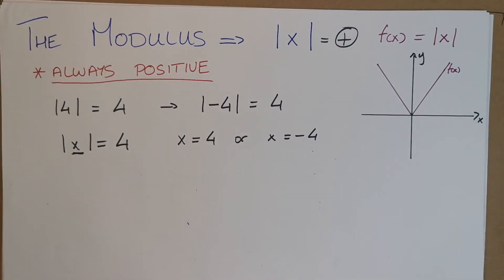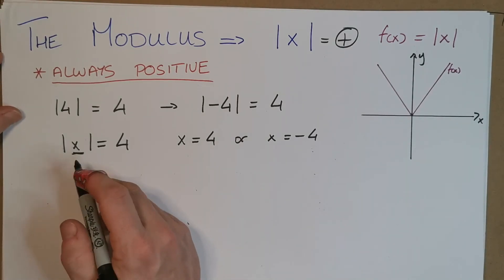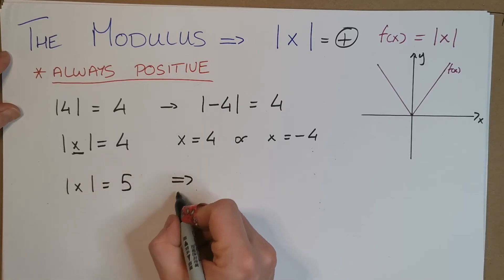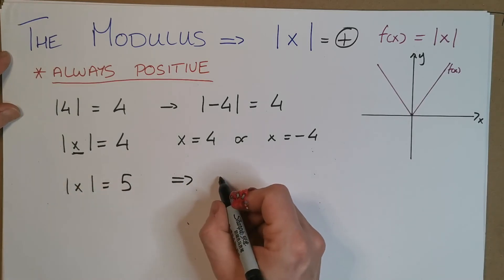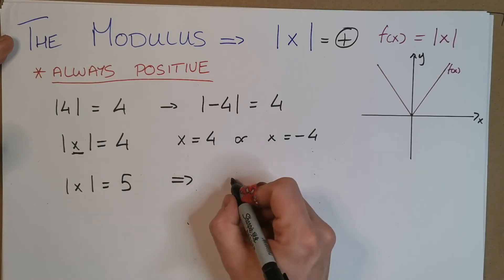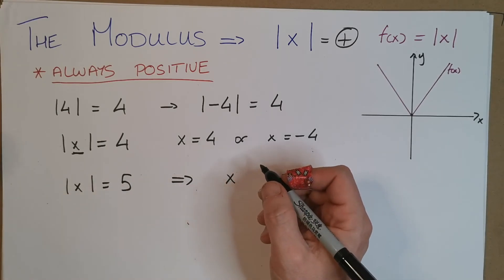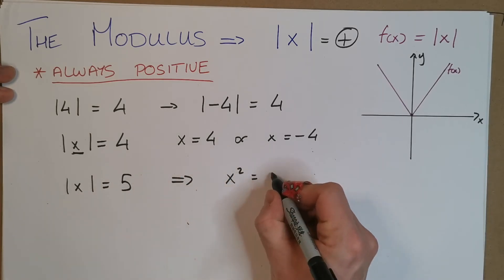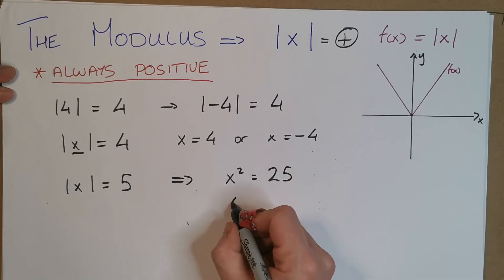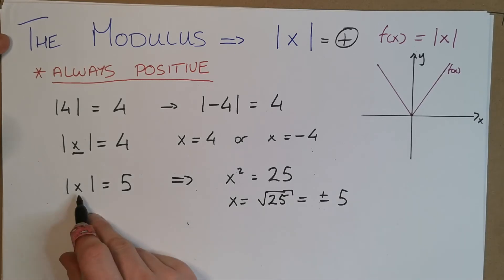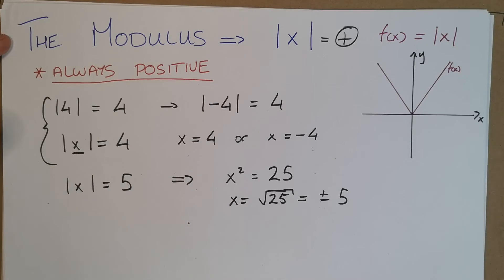The equations can get tricky, but there is an option to square both sides. You may have been taught: if the modulus of X equals 5, square both sides — treat the modulus brackets as regular brackets and square them. When we square, we always deal with the positive value. Squaring both sides gives X squared equals 25, so X equals the square root of 25, which is plus or minus 5 — back to the same result.